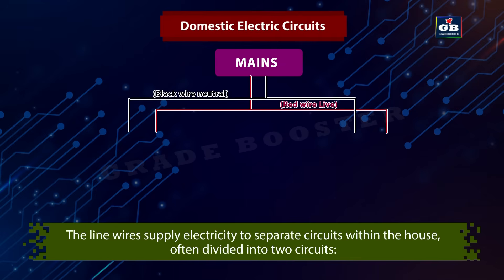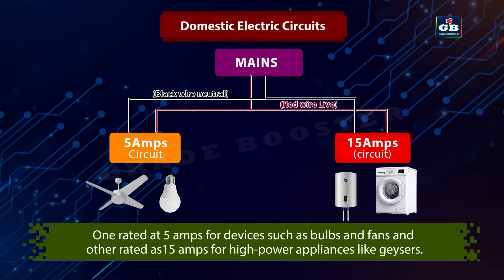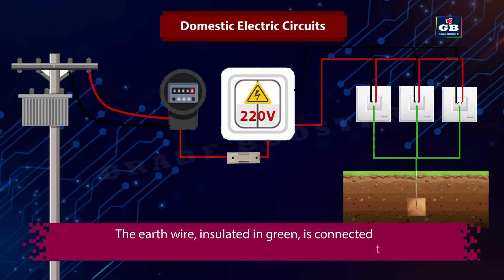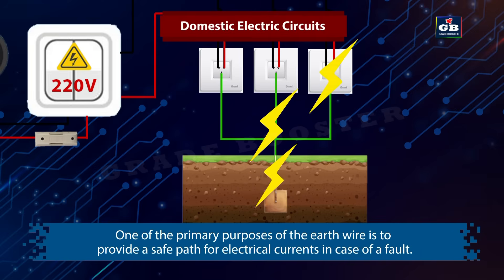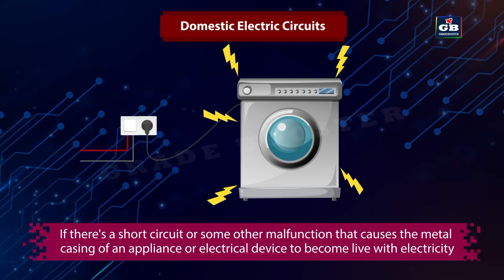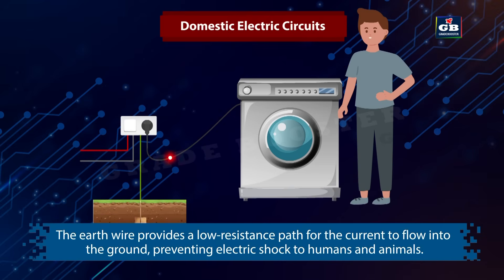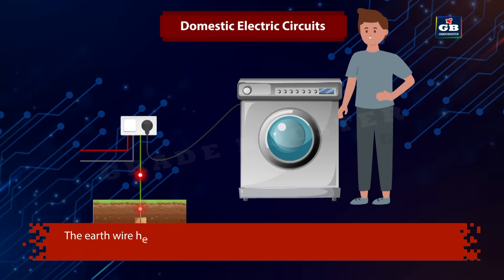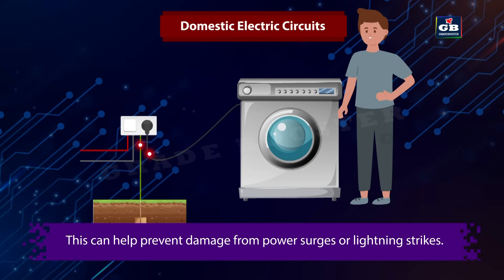Usually, we have two different circuits in our house: one rated at 5 amps for devices such as bulbs and fans, and another rated at 15 amps for high-power appliances like geysers. The earth wire, insulated in green, is connected to a metal plate buried near the house. One of the primary purposes of the earth wire is to provide a safe path for electrical currents in case of a fault. If a short circuit causes the metal casing of an appliance to become live, the earth wire provides a low-resistance path for the current to flow into the ground, preventing electric shock to humans and animals. It also helps protect equipment from damage by providing a path for excess current to safely dissipate into the ground, preventing damage from power surges or lightning strikes.